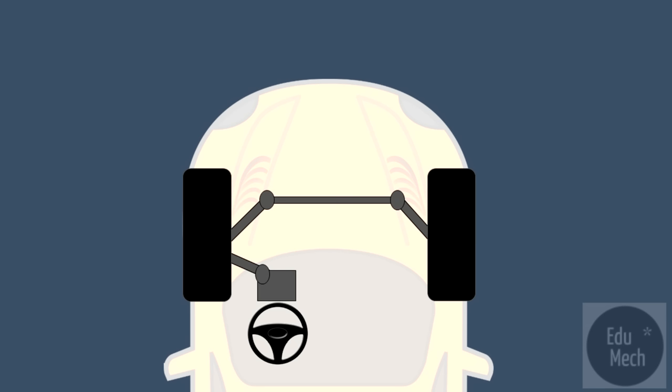It is also worth noting that some vehicles have track rods or steering racks in the front of the axle, so the adjustment will be reversed.